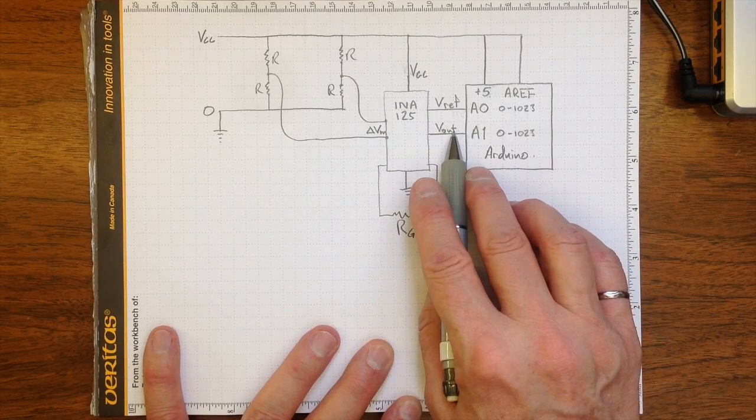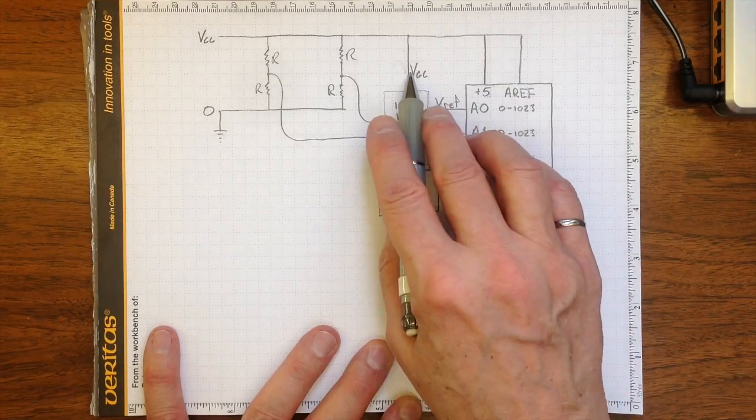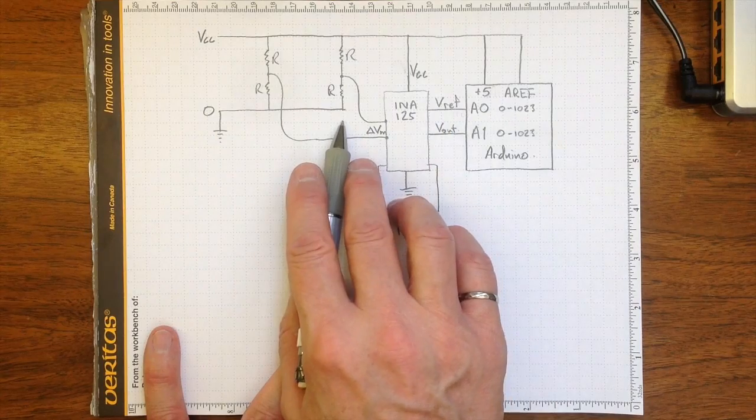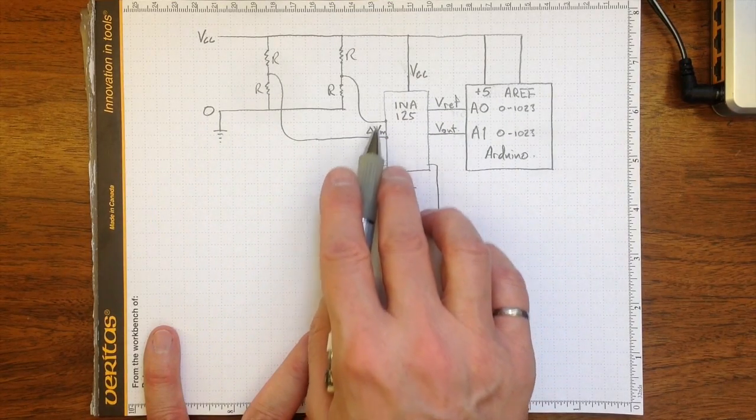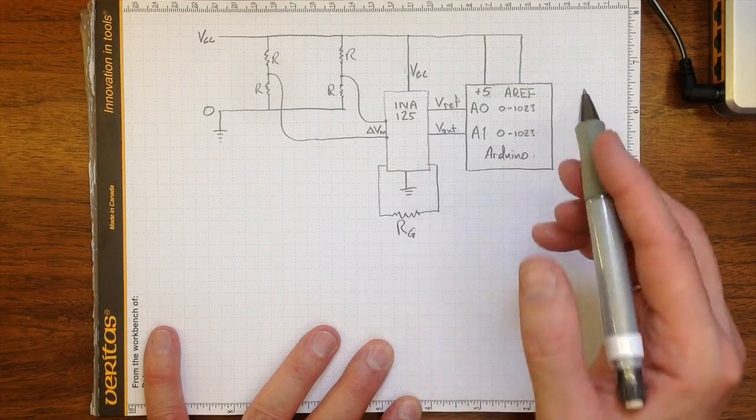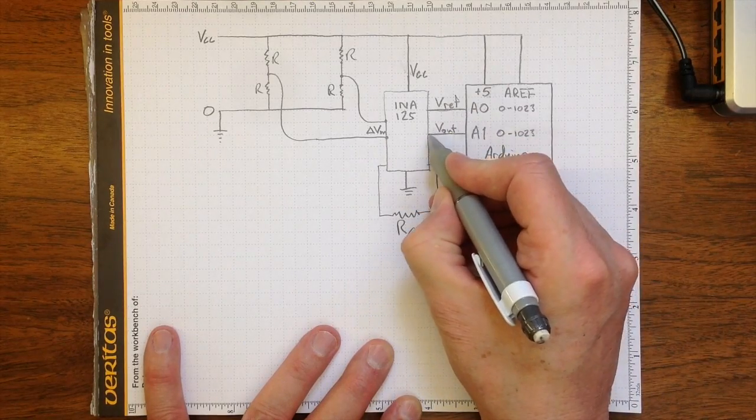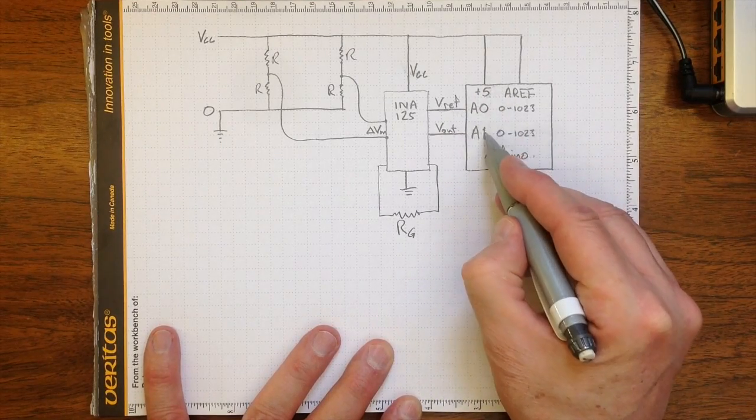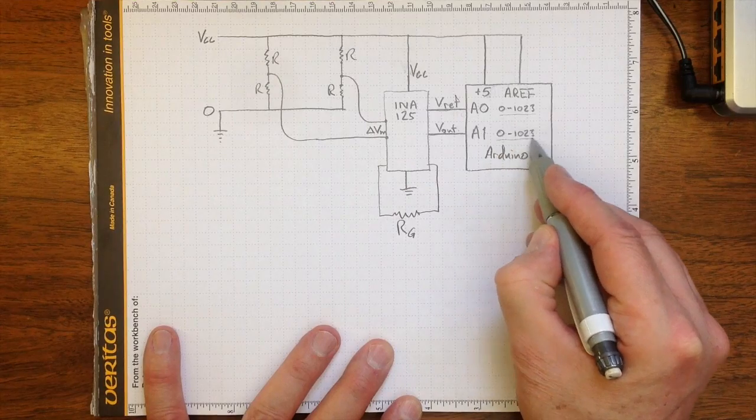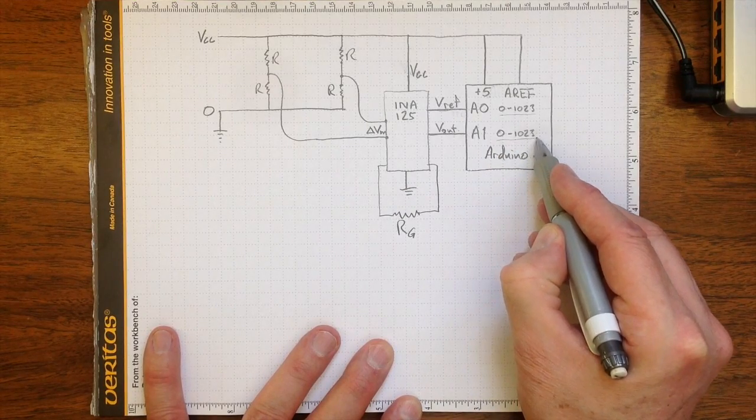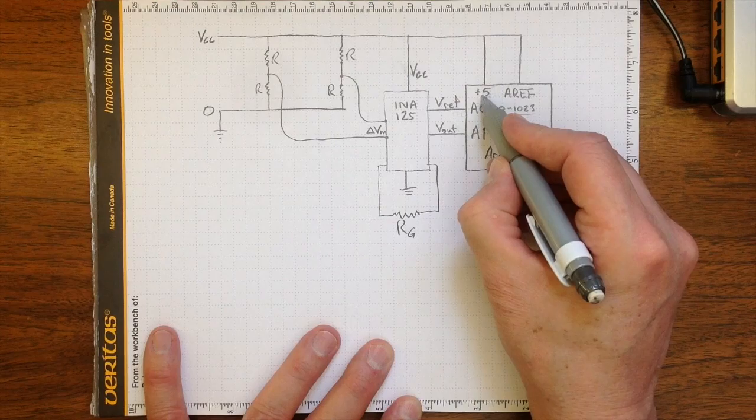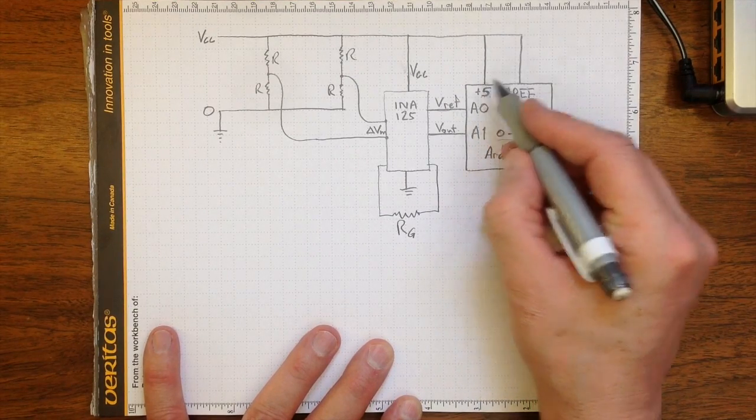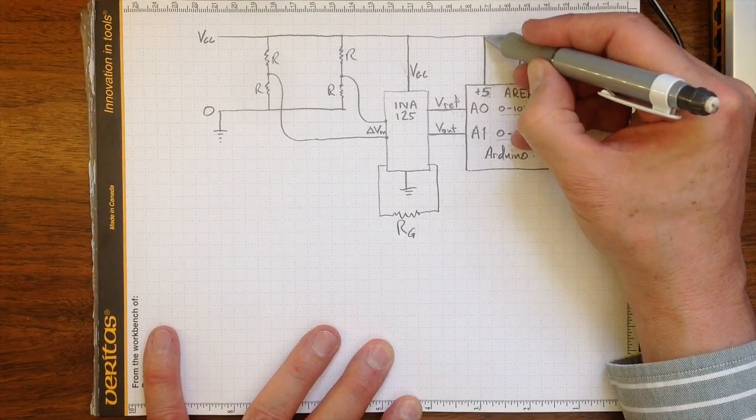So this output voltage is also going to depend on the magnitude of the supply voltage, this Vcc, that we're putting across here because it's been determined by the input voltage. Now when we go and measure these output voltages from the amplifier on our Arduino, if we connect them to the analog ports to convert them into numbers from 0 to 1023, and if we use the same reference voltage for the conversion, then that conversion will also depend on what the supply voltage was.